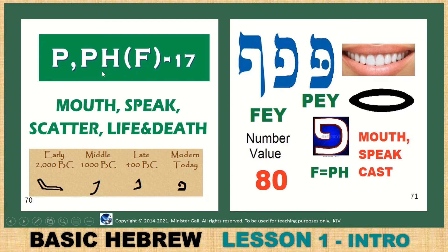Peh or Feh — F like in Phyllis, PH like in Phyllis. The seventeenth letter. Mouth, to speak, scatter, life, death — speak with the tongue: the power of life or death. It looks like a mouth, and today it still looks like a face with a tongue — the mouth is open. Peh when it has a dagesh — the dot in the middle — is P; with no dot it is PH or F. Value number 80. The final or soft form at the end of the word — with a dot it is a P, without the dot it is PH or F. This falls below the line.